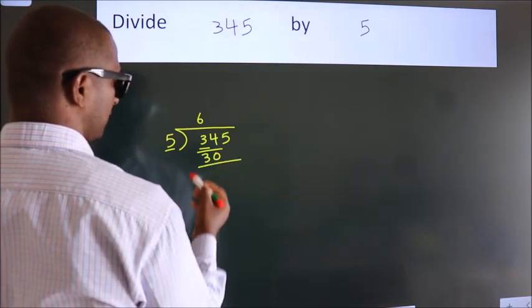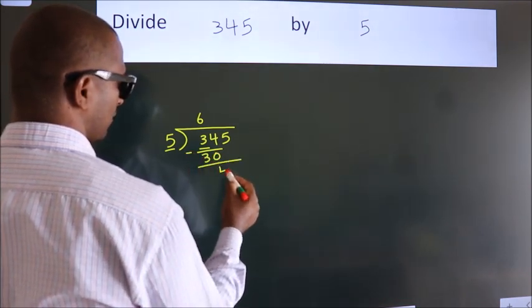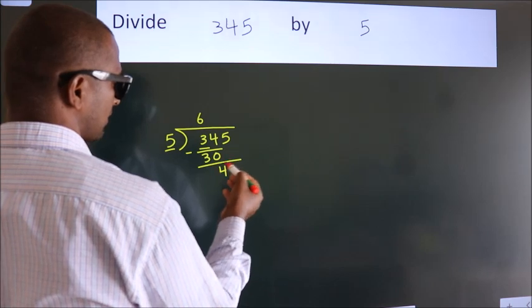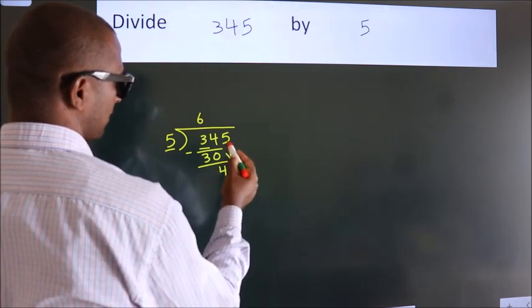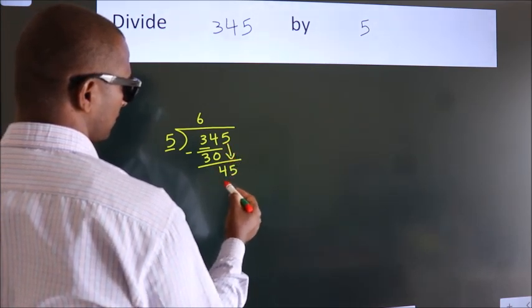Now we should subtract. We get 4. After this, bring down the beside number. So, 5 down. So we have 45.